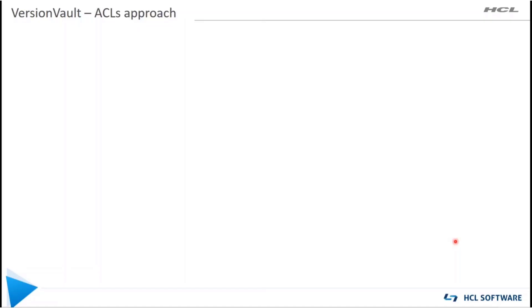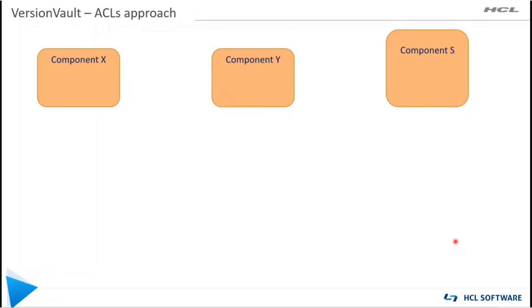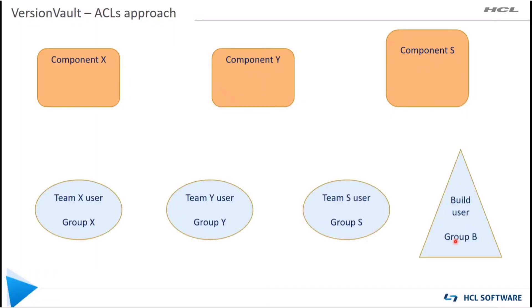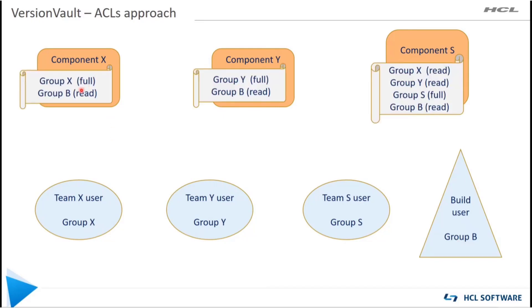Now let's see how the same VARB access management can be done with an ACL-based approach. The same set of components X, Y, and S and the same set of users apply. In the ACL-based approach, there will be policy and role map files that are created and attached to the component VARBs. For the Team X user who needs checkout and check-in access on component X and read-only access on component S, there will be an entry in the policy file where group X will have full permission for component X and read access on component S. So he will have checkout and check-in on component X, only read access on component S, and there is no need for a no-checkout trigger.